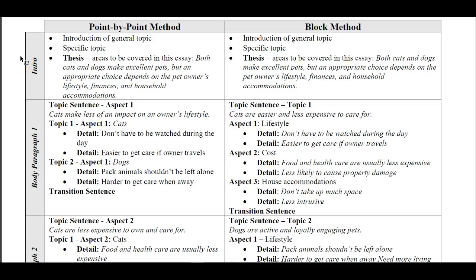Let's go through two of the methods of how to set up a compare and contrast essay: point by point or block method. Let's take a look at the thesis. Here we're going to say both cats and dogs make excellent pets — they agree that cats and dogs make excellent pets. 'Both' means to compare.